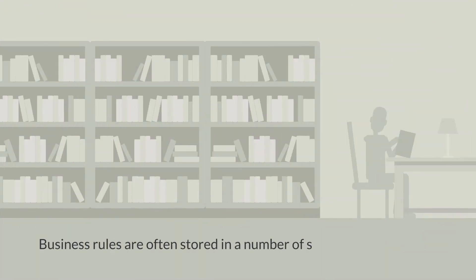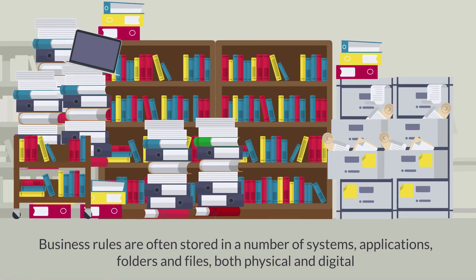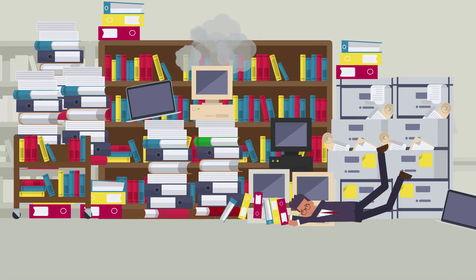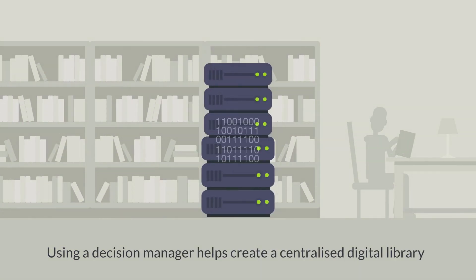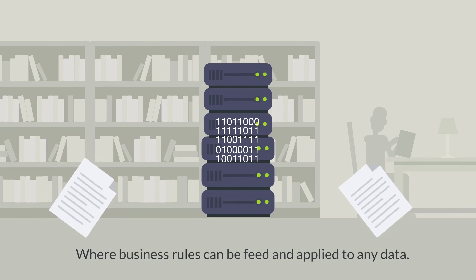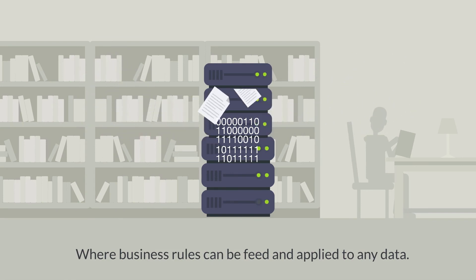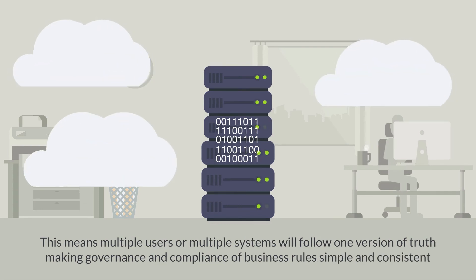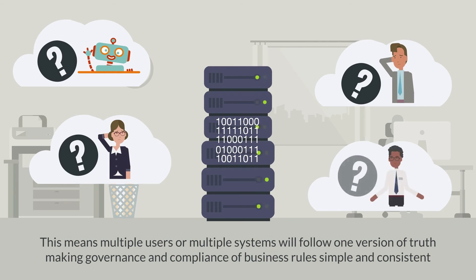Many of the issues with business rules is that they are stored in multiple formats, both physically and digitally. This makes applying and updating them incredibly difficult and time-consuming for businesses. Using a Decision Manager helps to create a centralised library where business rules can be stored, easily accessed, updated, and applied to any data. This means multiple users or multiple systems will follow one version of truth, making governance and compliance of business rules simple and consistent.